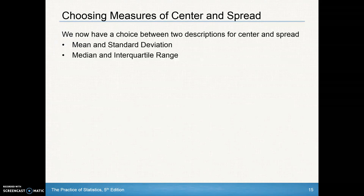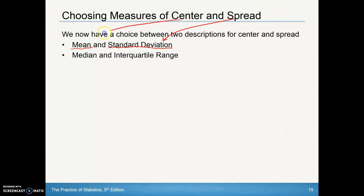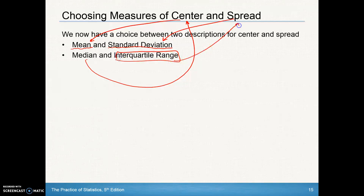How do we choose which measure of center and which measure of spread? If you're using the mean, you'll use the standard deviation as a measure of spread. If you are using median as your measure of center, you should use IQR as your measure of spread. We pair them with each other.